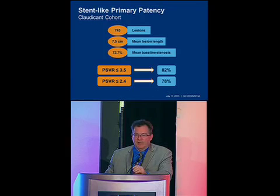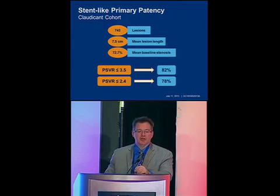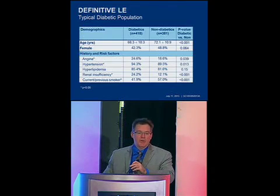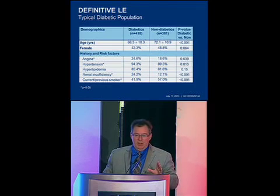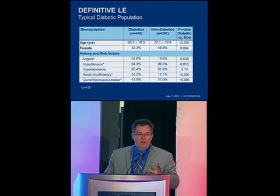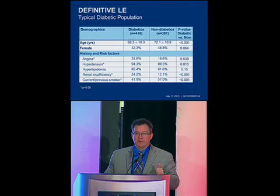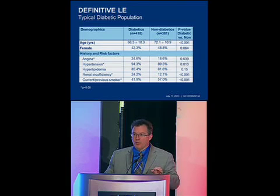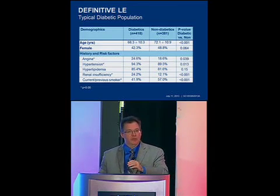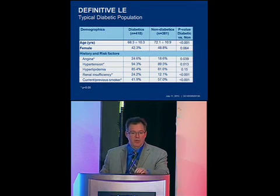Although it's hard to compare non-randomized studies apples to apples, PSVRs of 2.4 is typically what we see in the literature. Breaking it down into the diabetic population, diabetics are usually sicker patients — more frequently having angina, renal insufficiency, and hypertension. These more significant comorbidities are why these patients are more difficult to manage, especially surgically.